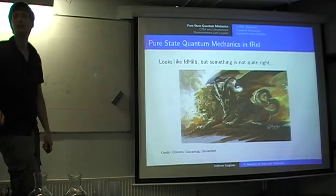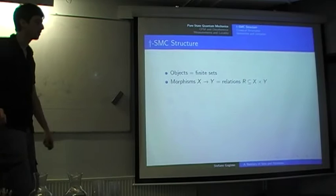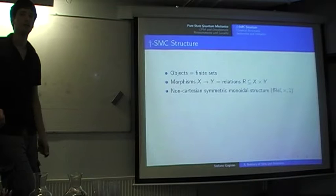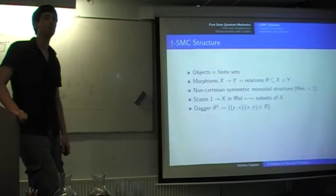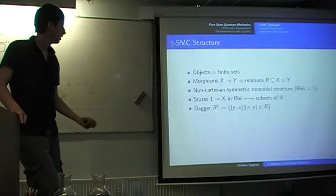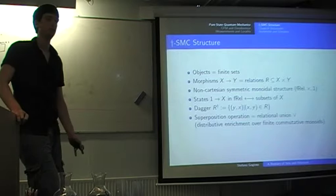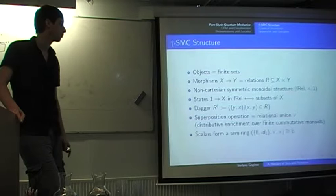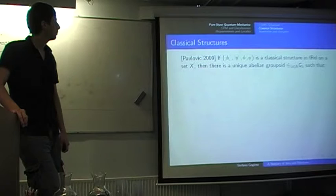First of all, pure state point mechanics in FREL. It does look like F-HILB but there's actually something fishy going on. Objects are finite sets, morphisms are relations. There is a non-Cartesian semifical neural structure even though the tensor is called the Cartesian tensor. The states correspond to subsets of each single set, and the dagger is given by just inverting the relations, so swapping pairs, inputs and outputs. It has a superposition operation, so it is enriched over finite commutative monoids, but not over finite commutative roots. The scalars form a semi-ring which makes it suitable for analysis in appropriate contextuality frameworks.